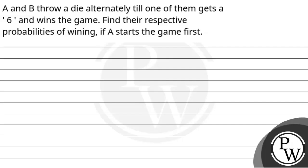Hello bacho, so let's discuss the question. The question says A and B throw a die alternately till one of them gets a six and wins the game. Find their respective probabilities of winning if A starts the game first.